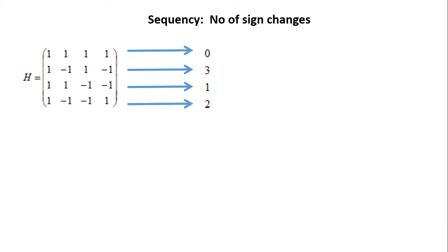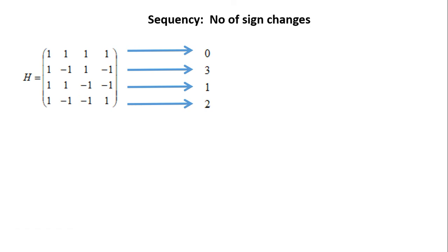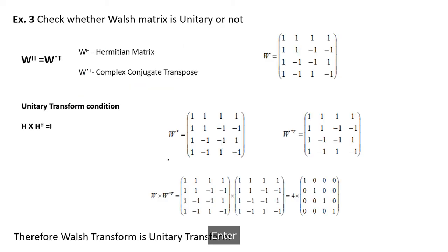Examining the Walsh-Hadamard matrix rows by sequence: the first row has no sign changes, extracting purely low-frequency components. The second row alternates 1, −1, 1, −1 continuously, extracting high-frequency components. The third row has one sign change — positive to negative — extracting a mix of low and high. The fourth row has two sign changes, extracting components with higher-frequency content.